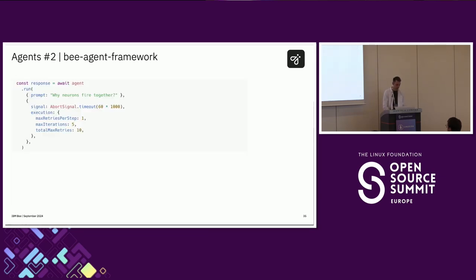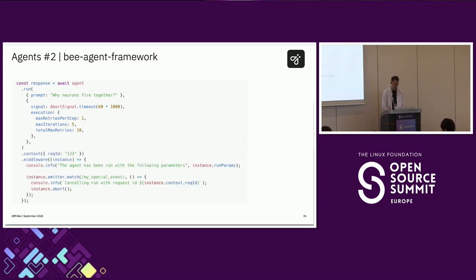You can pass multiple parameters to the run method — right now we are adding a signal like a timeout to our agent, and we also specify execution parameters like the maximum number of iterations the agent can do before it halts, the maximum number of retries, and so on. You can even bind a run context and listen for additional events that are happening inside the agent.